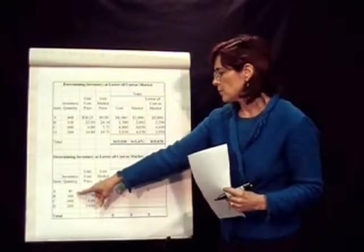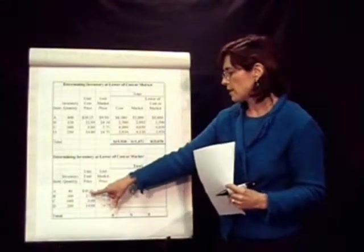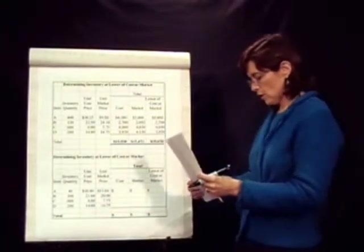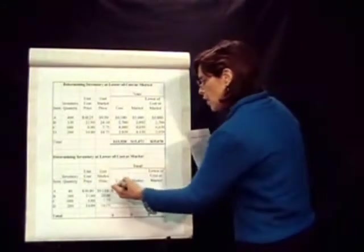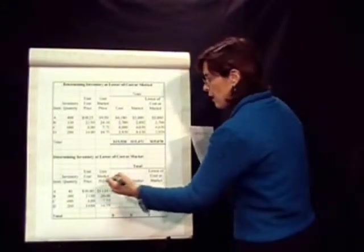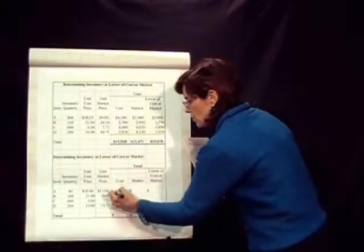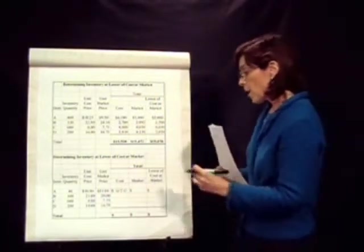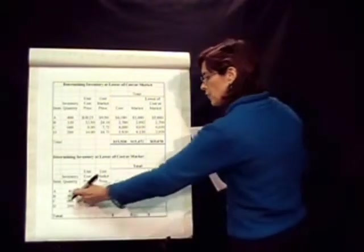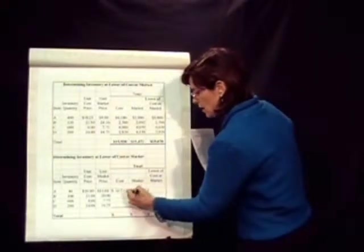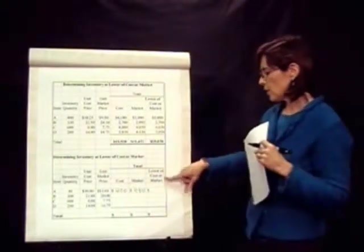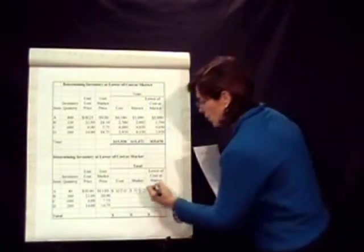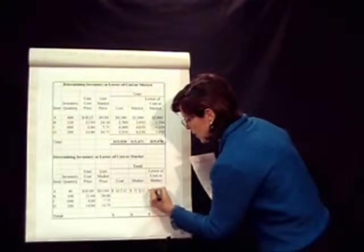I'll start with the first inventory item. We have 40 of this particular item. It cost us $10, and the market price was $11. So if we multiply that out, the cost for this particular item A would be $400. The market price for it, on the other hand, 40 times $11 gives us $440. So if we're choosing either the lower cost or market, we just have to look which is lower, $400 or $440, and obviously the $400. So that's the price that we'll use.